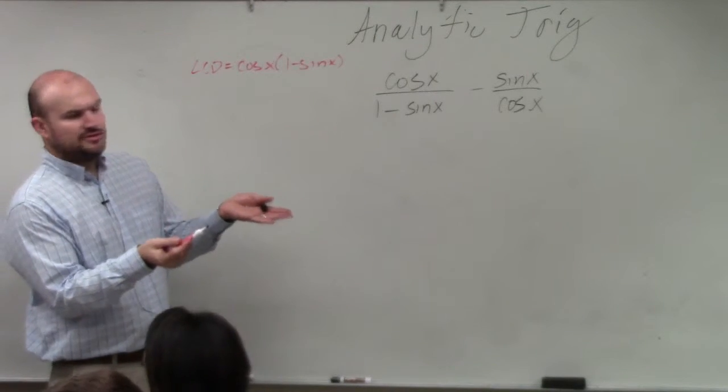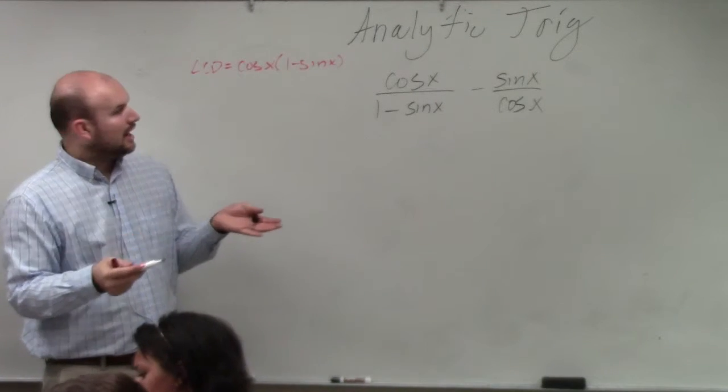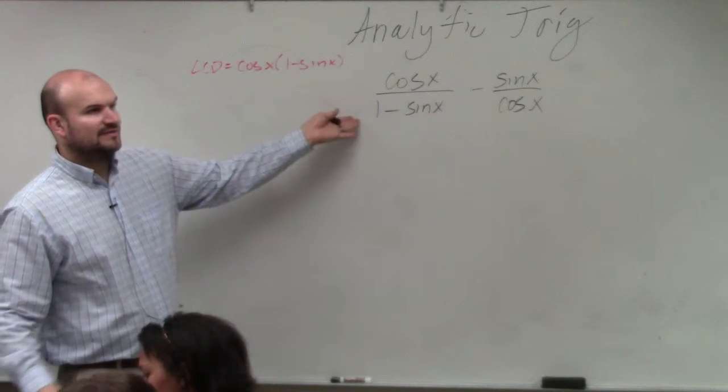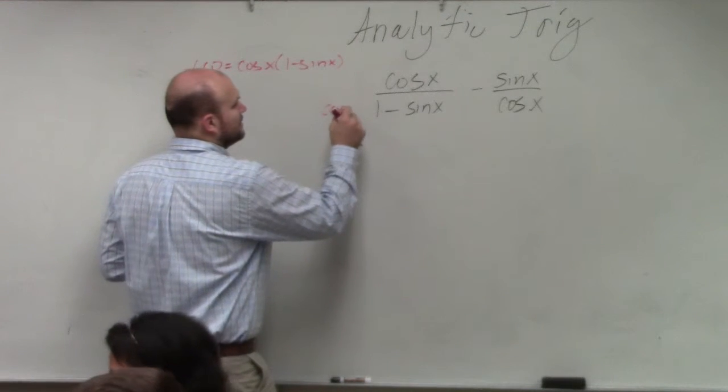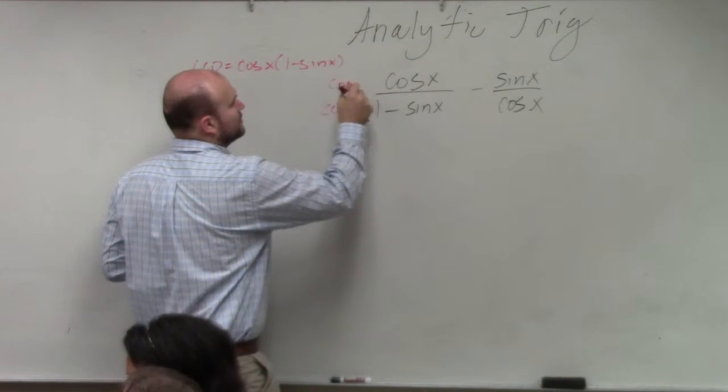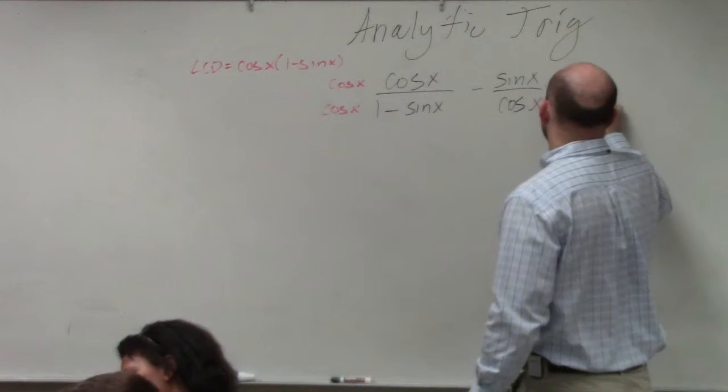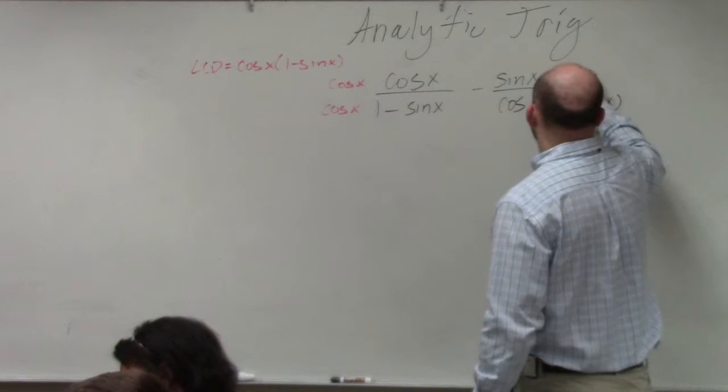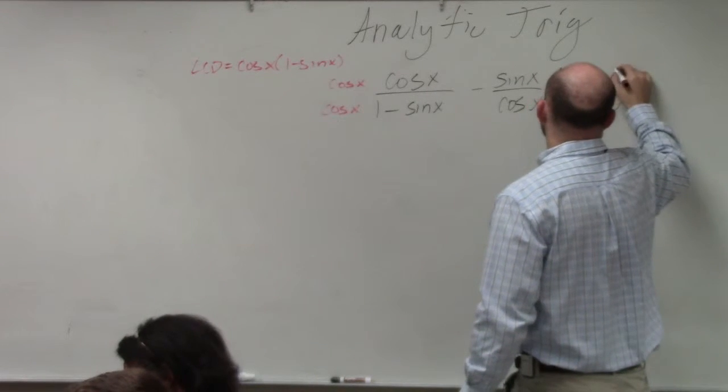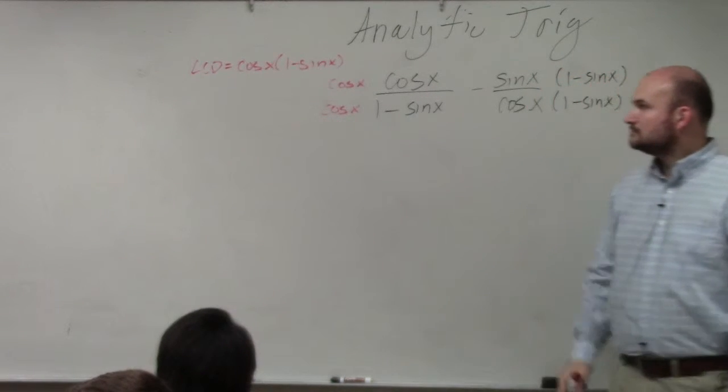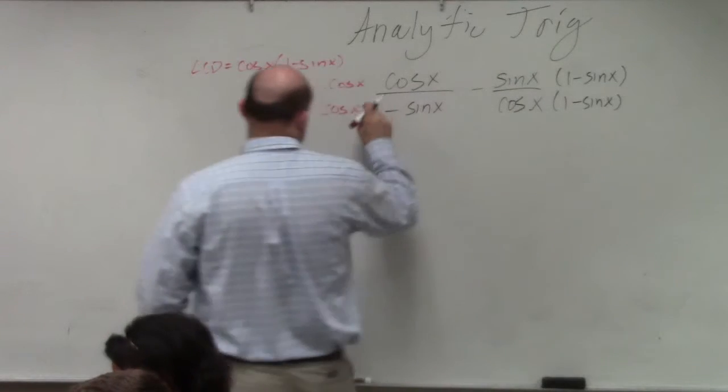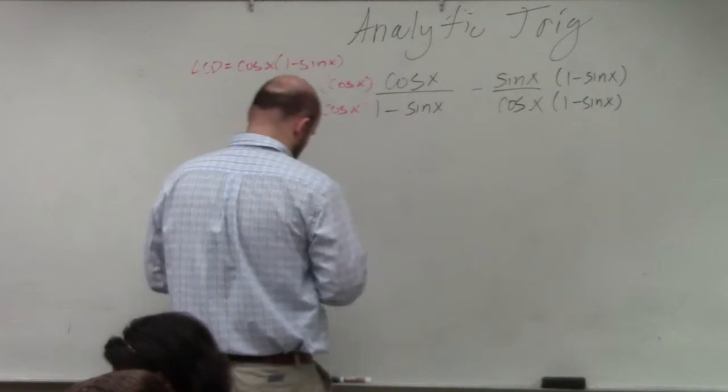So to get common denominators, you multiply so that both of them have the common denominator. So here, I'll multiply by cosine of x over cosine of x. Here, I'll multiply by 1 minus sine of x over 1 minus sine of x. Everybody agree with me?